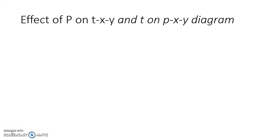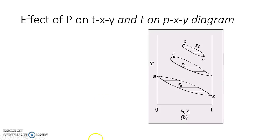Let us see how pressure and temperature affect a Pxy or Txy diagram. When we increase pressure on a particular species, its boiling point will increase. So T1_sat and T2_sat, which are the extremes of the diagram, will naturally increase. For example, in a Txy diagram at a given pressure Pa, K corresponds to T1_sat of component 1 and H corresponds to T2_sat of component 2. When we increase pressure, both boiling points increase in their respective directions.